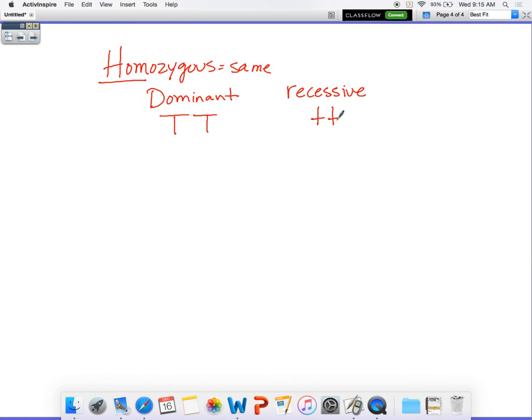Or whatever letter you chose to use, like for instance, the last time we chose a B for fur color. And then heterozygous is different. So that would be big T, little t, because you have a capital letter and then you have a lowercase letter. So they are two different alleles.